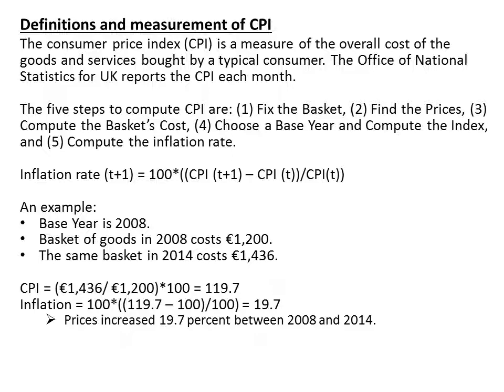As an example, to give an intuition of what happens with CPI between 2008 and 2014: the basket of goods in 2008 was 1,200 euros, and the same basket in 2014 was 1,436 euros. From this we can compute the CPI and inflation, and we find that prices increased by 19.7% between these two periods. That's basically how this is estimated.